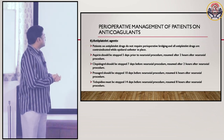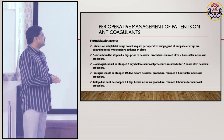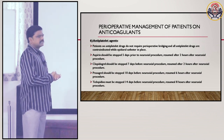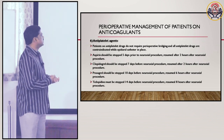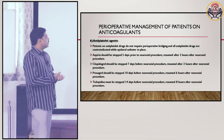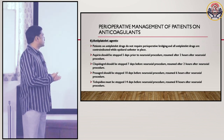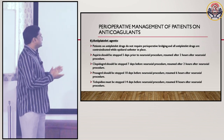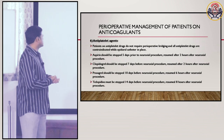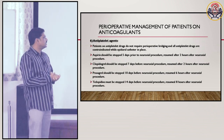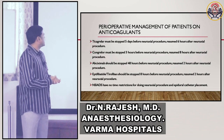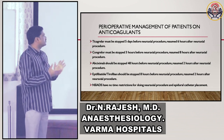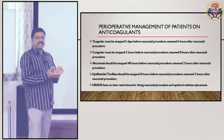Antiplatelet agents: patients on antiplatelet drugs do not require perioperative bridging, and all antiplatelet drugs are contraindicated while an epidural catheter is in place. Aspirin should be stopped 5 days prior to neuraxial procedure, resumed 2 hours after. Clopidogrel should be stopped 7 days before, resumed after 2 hours. Prasugrel should be stopped 10 days before, resumed 6 hours after. Ticlopidine must be stopped 4 days before and resumed 8 hours after. Ticagrelor must be stopped 5 days before and resumed 6 hours after. Cangrelor must be stopped 3 hours before and resumed 8 hours after neuraxial procedure.